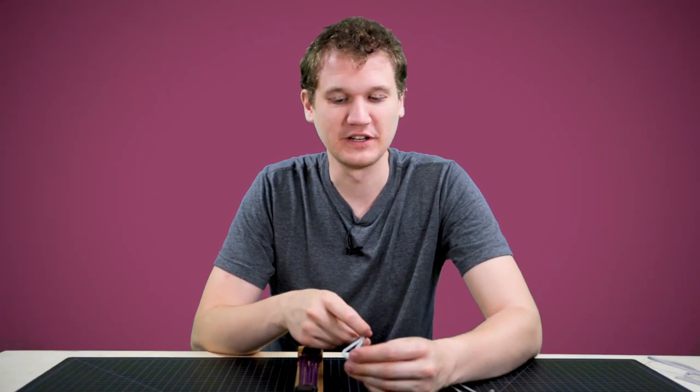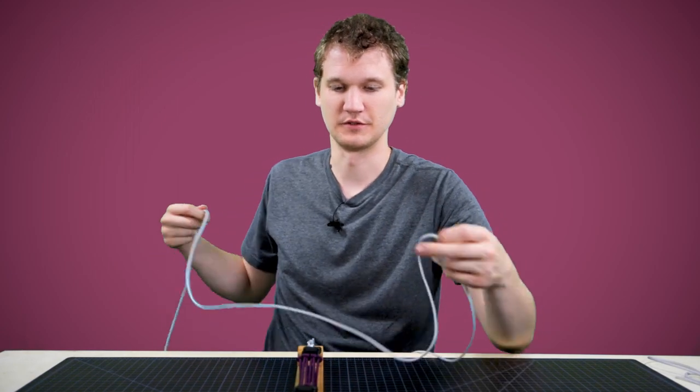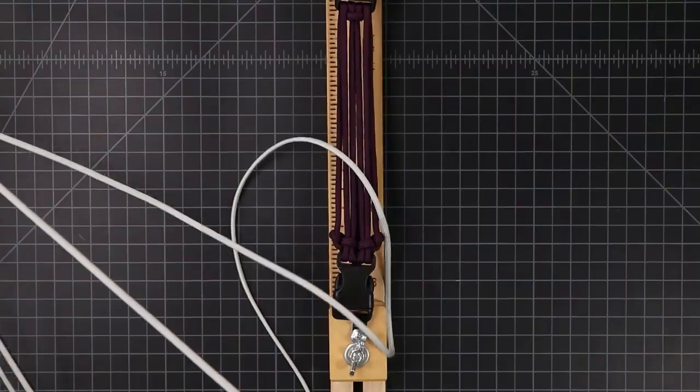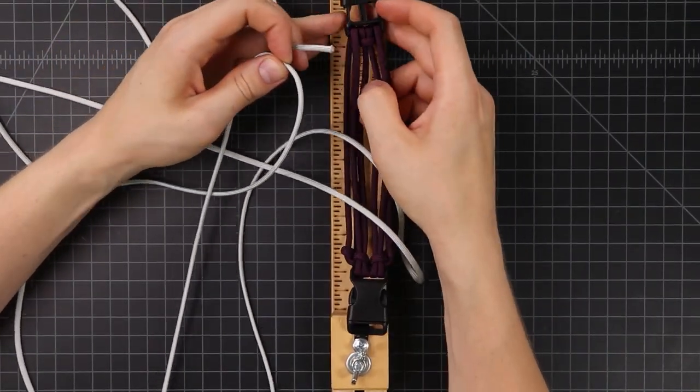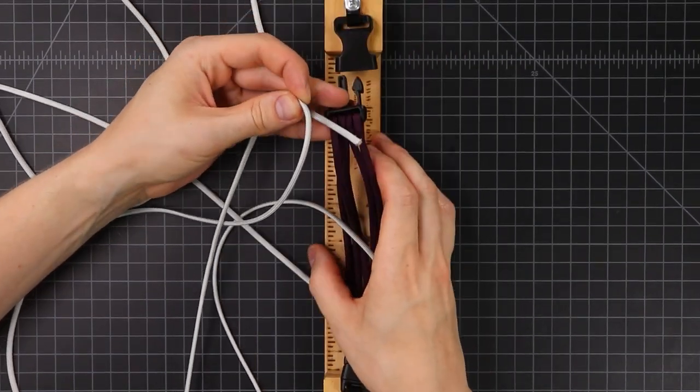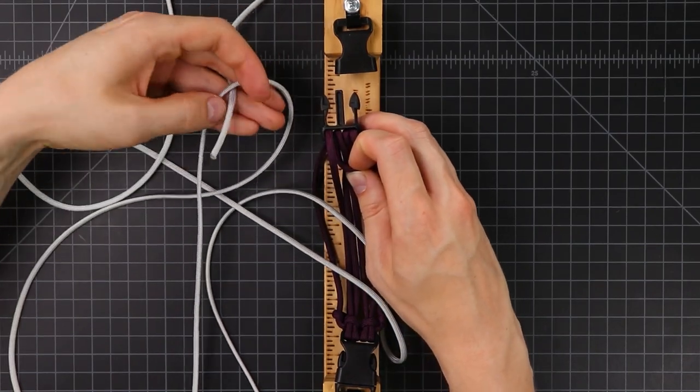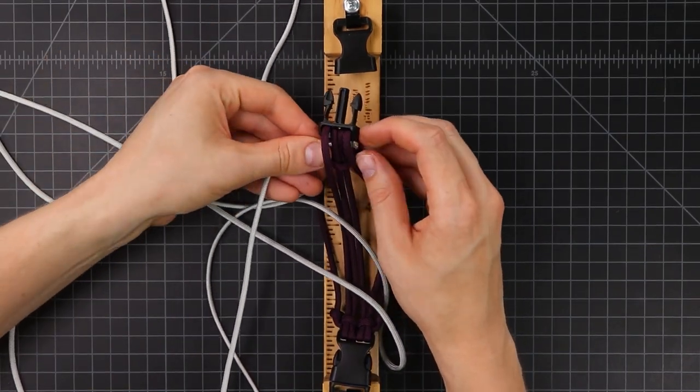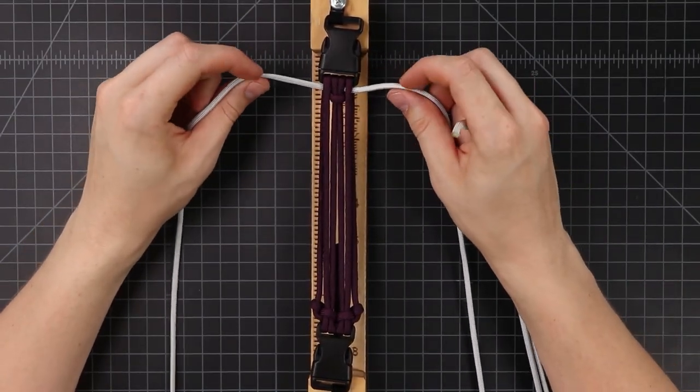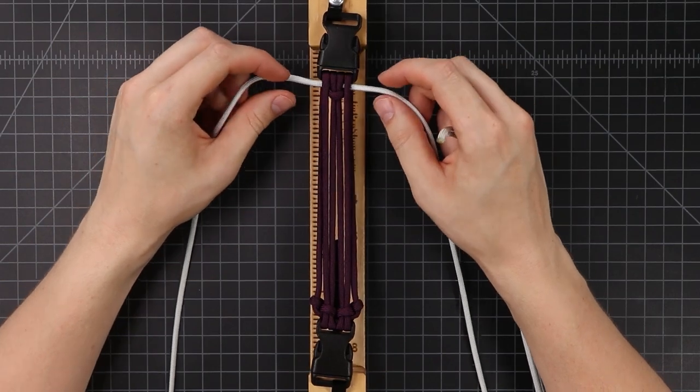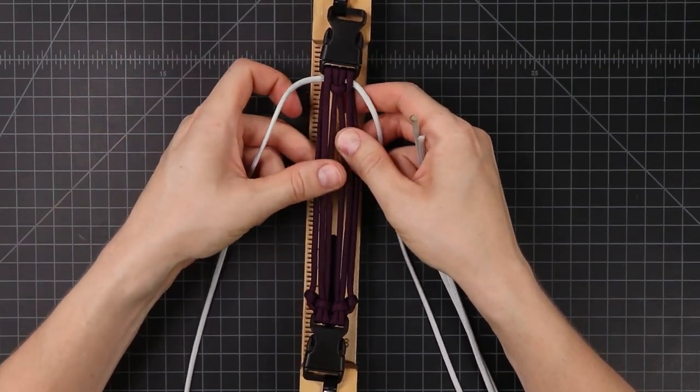So before you start the weave you'll need to find the middle of your cord. And we're gonna put that through this top cow hitch. So holding on to the middle, we're gonna bring our cord through that top cow hitch right here. Just loosen that a little bit and put the end through. Alright, so we're gonna have two cords that we're weaving but they're never gonna intersect. One is gonna be weaving over on this side, one is gonna be weaving on the other.